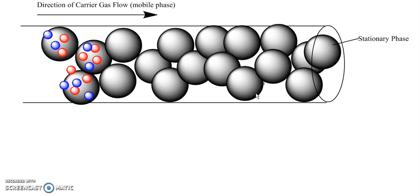This is called the stationary phase because it does not move - it stays in the column.